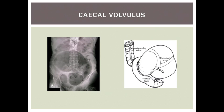Caecal volvulus is a rare x-ray finding. A twist occurs in the ascending colon that leads to a massively distended caecum. The apex of the volvulus points towards the left upper quadrant, and urgent surgical decompression is needed due to the risk of perforation.